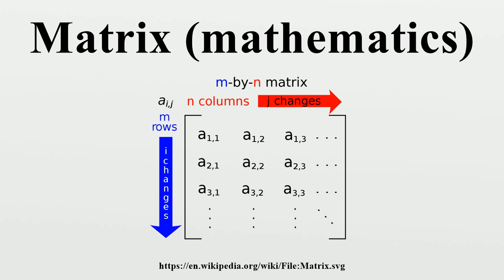A matrix is a rectangular array of numbers or other mathematical objects for which operations such as addition and multiplication are defined. Most commonly, a matrix over a field F is a rectangular array of scalars each of which is a member of F. Most of this article focuses on real and complex matrices, i.e., matrices whose elements are real numbers or complex numbers, respectively. More general types of entries are discussed below.